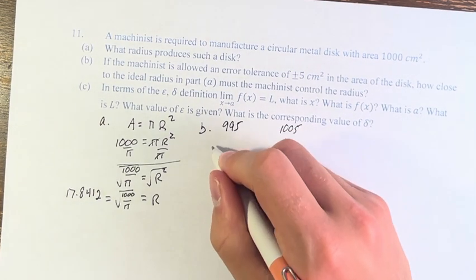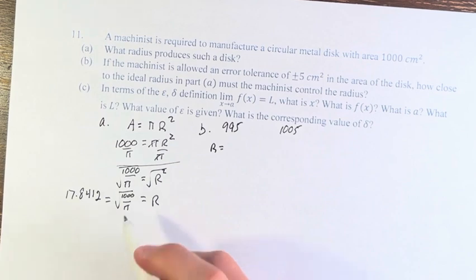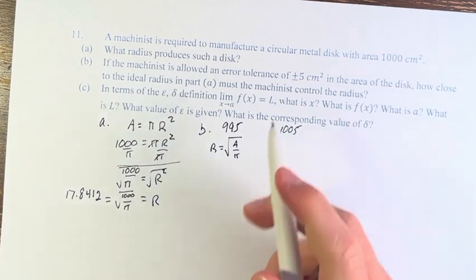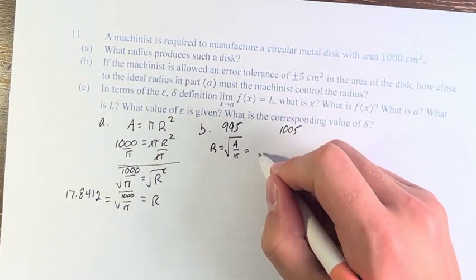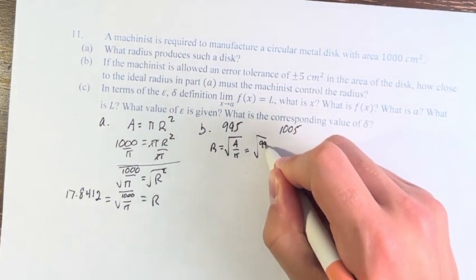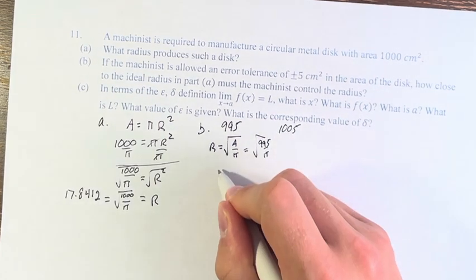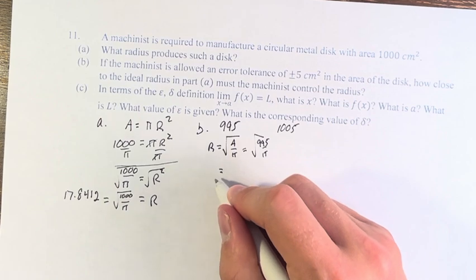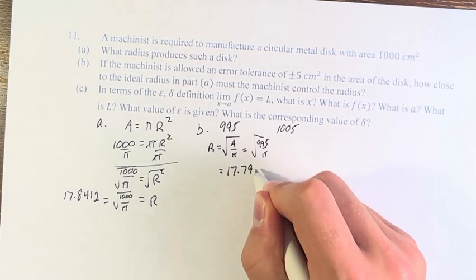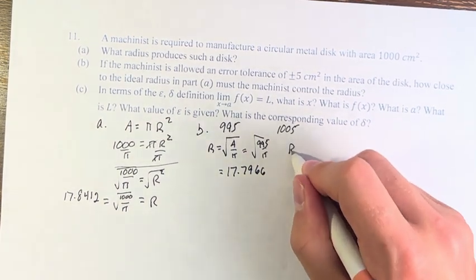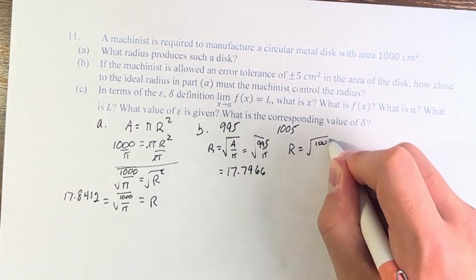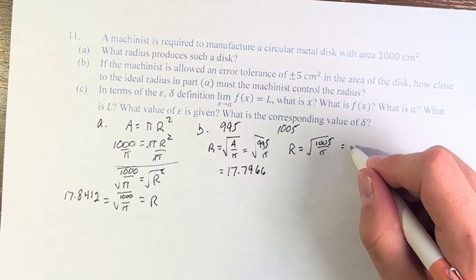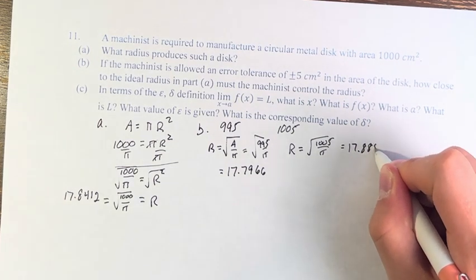So, using that the radius is equal to the square root of the area divided by pi, which we can see right here, we can see here that it's 995 over pi, which is roughly 17.7966. And here, it's 1,005 divided by pi, which is roughly 17.8857.